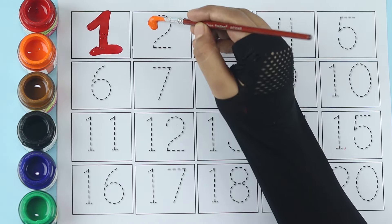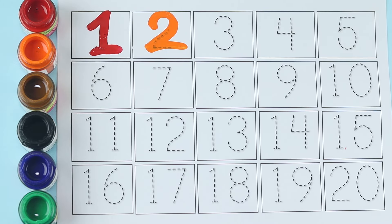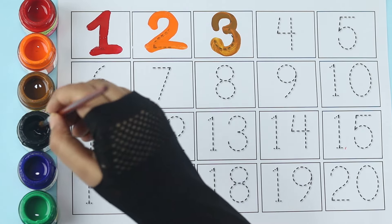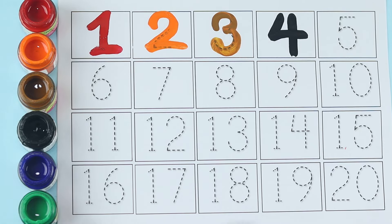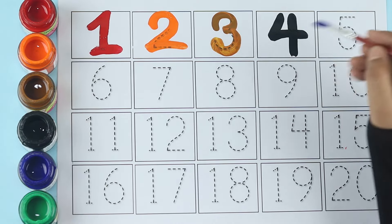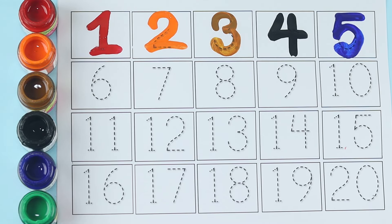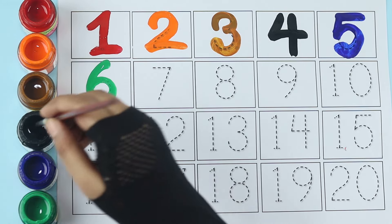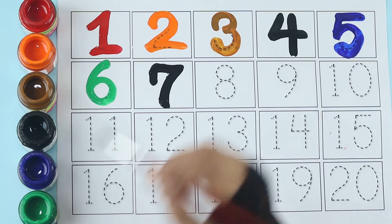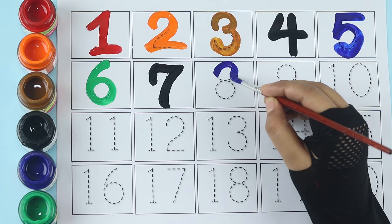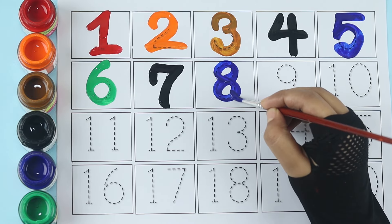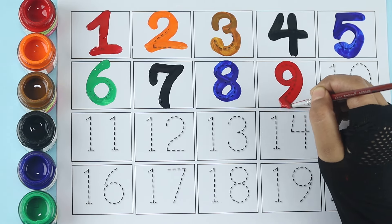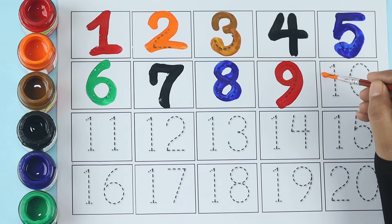Orange color, one. Brown color, two. Black color, three. Blue color, four. Green color, five. Black color, six. Blue color, seven. Red color, eight. Orange color, nine. Ten.